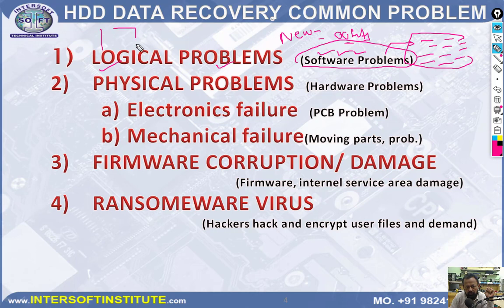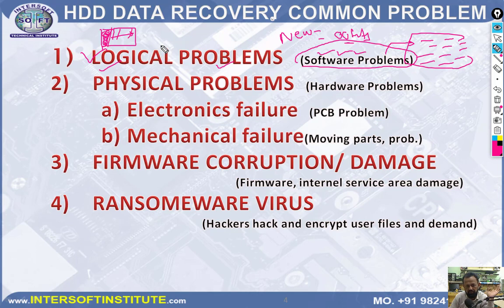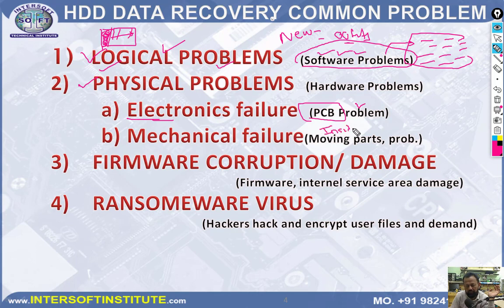But if there is a more than 1 TB hard disk that has been formatted and then data written again, those previous files may not recover fully. Logical recovery is very easy and many technicians do this work easily. Another condition is physical problems. Physical problems are of two types: one is electronic — meaning PCB-related problems like PCB damage or burn — and two is mechanical failures, meaning inside problems like head damage, scratches, or motor not working.